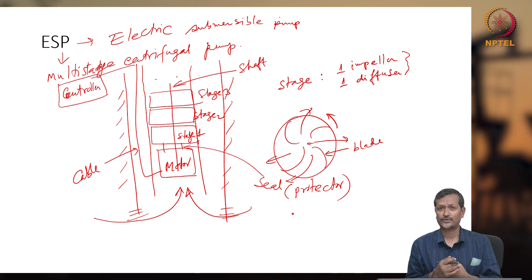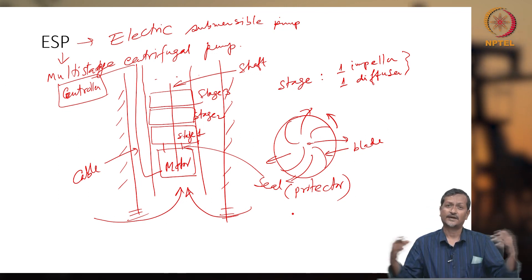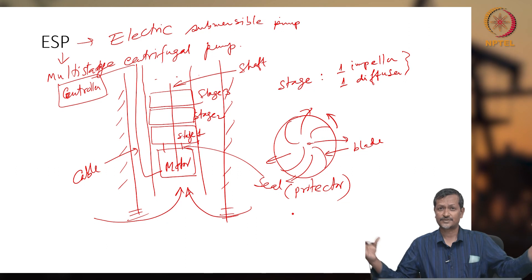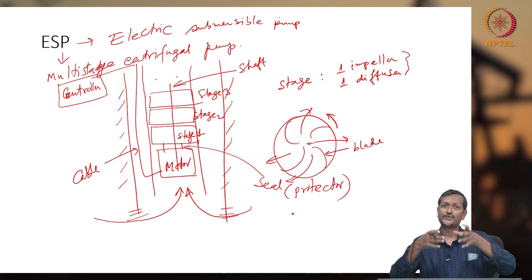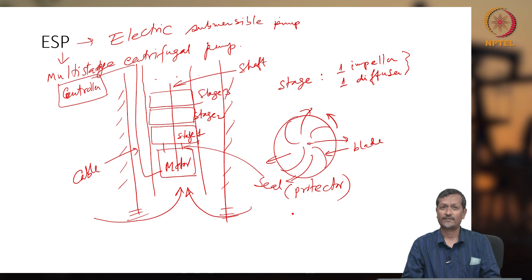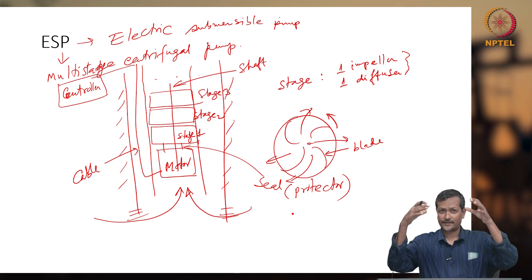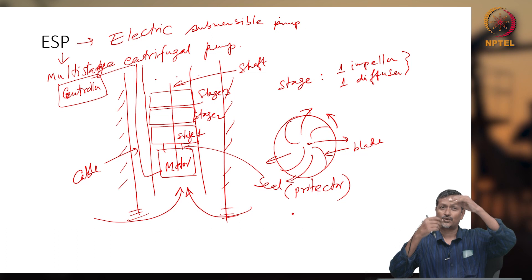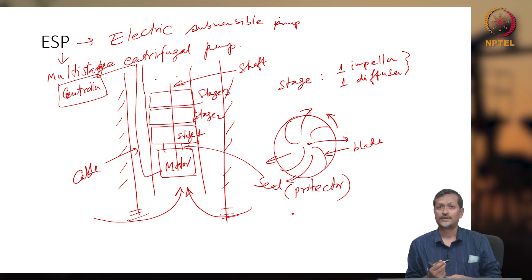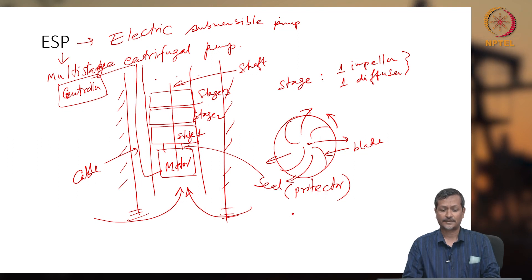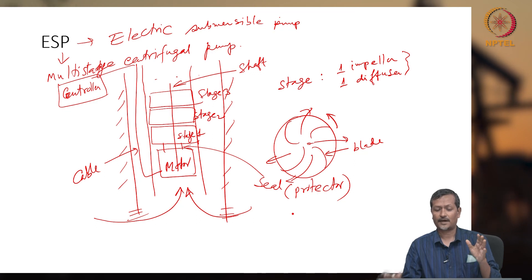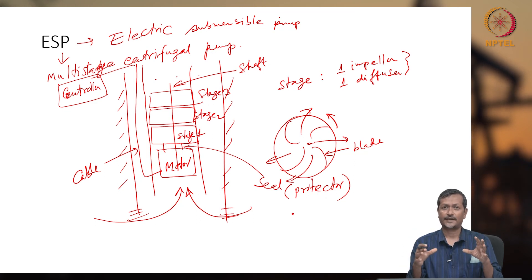If you want to use a single stage for the same head and flow rate, you need a very large diameter pump. To reduce the diameter, you use multiple stages. In a wellbore, there are diameter limitations, so you increase the number of stages. If you have a larger diameter, the number of stages needed is reduced, and the total pump length is reduced. Later we will discuss in detail how ESP diameter links with the number of stages.